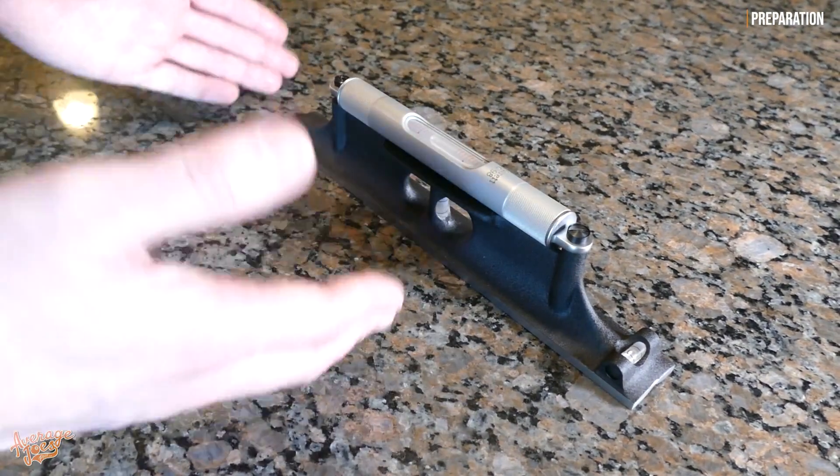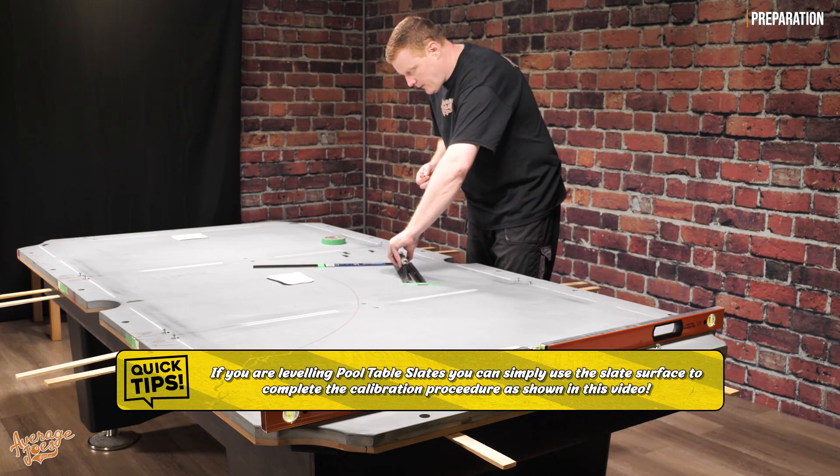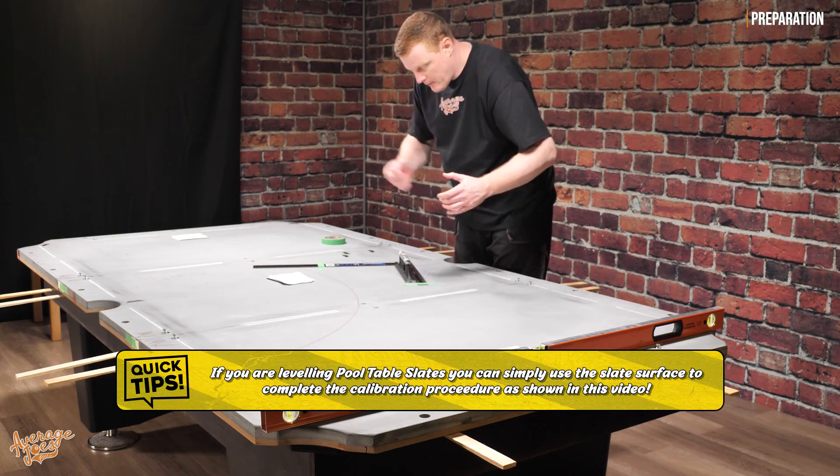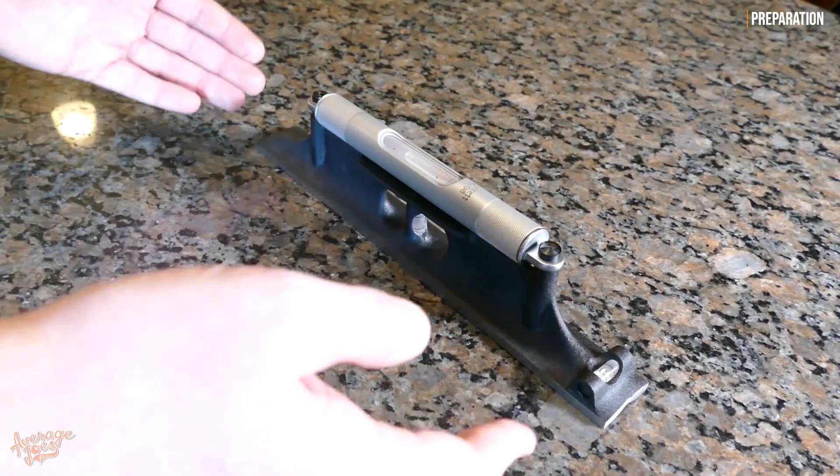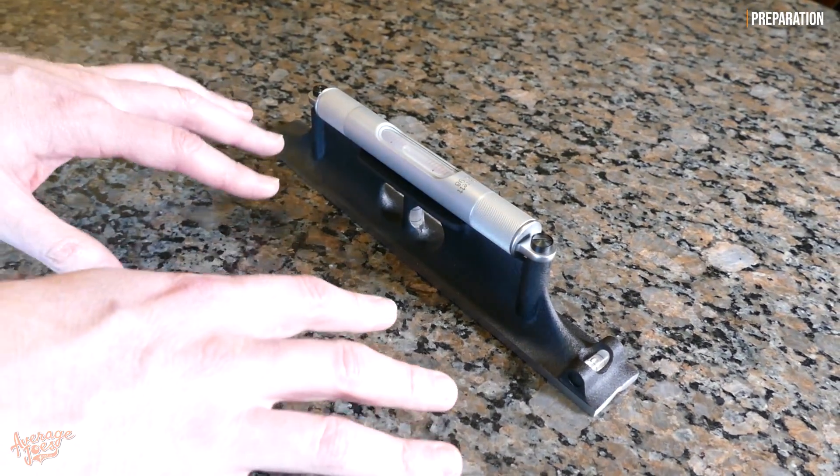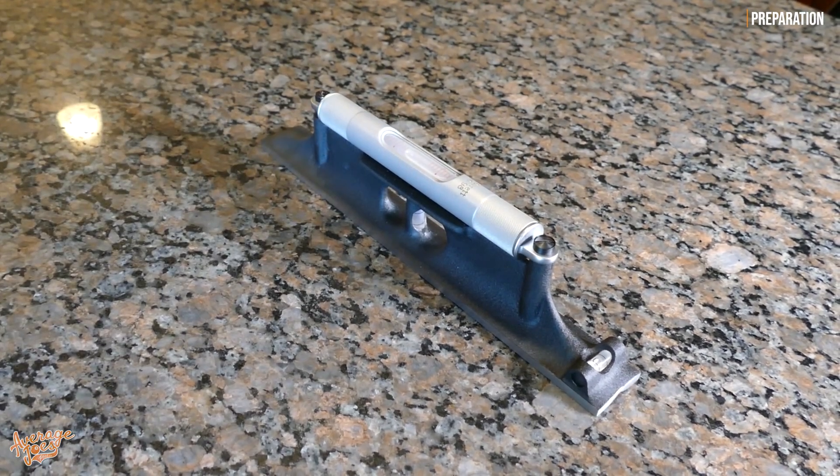Ideally you want something machined like our granite worktop here, or if you've got a steel workbench, something like that is also ideal. But you don't want to be trying to calibrate something like this using something that has flexibility in it, such as wood. So make sure you have a nice solid and flat surface. Remember it doesn't have to be level.